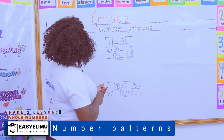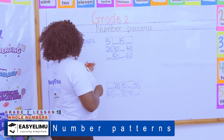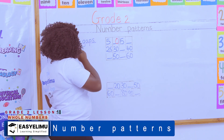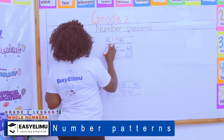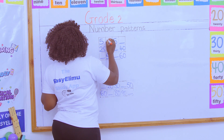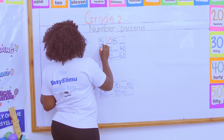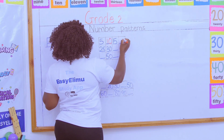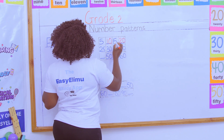So, when you are counting in fives, if the first number has a five, the second number must have a zero. Wow. And so, what is the missing number there? Which number is between five and fifteen that has a zero? Five and fifteen — it is ten. Yes, so we say five, ten, fifteen. So, which number is here? It must have a zero, and that number is twenty.